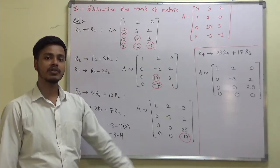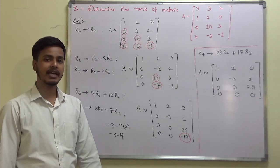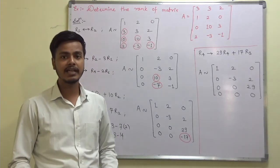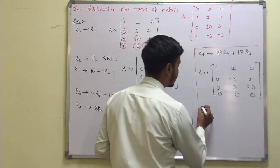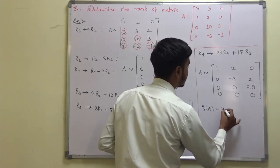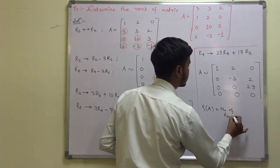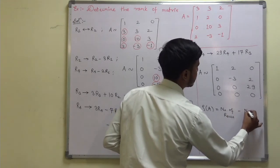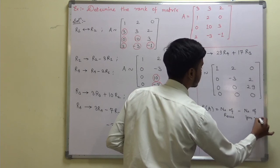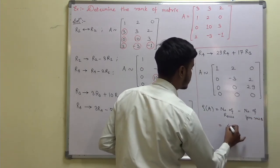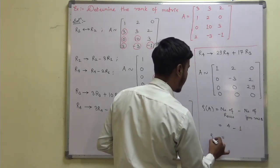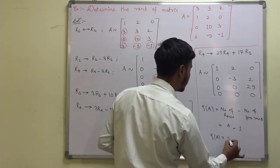Now you can easily see how many non-zero rows there are — 3. So rank of A equals number of rows minus number of zero rows: 4 minus 1 equals 3. So rank of A is equal to 3.